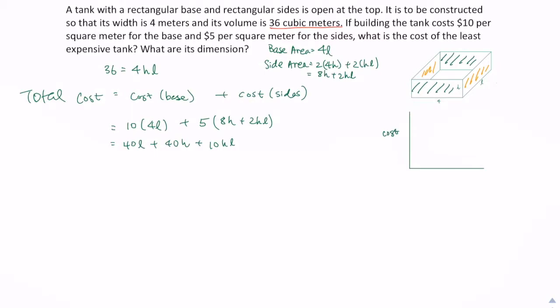What I would do is that I will go ahead and make use of this equation, 36 equals 4hl. I'm going to solve for l so that I can see more h. To solve for l, I will simply do 36 divided by 4h, which is the same thing as 9 over h. So all the l's that I see in the cost equation will be replaced by 9 over h. So 40 times 9 over h plus 40h plus 10h times 9 over h. In this case, we will be able to simplify the equation a little bit: 360 divided by h plus 40h plus 90.